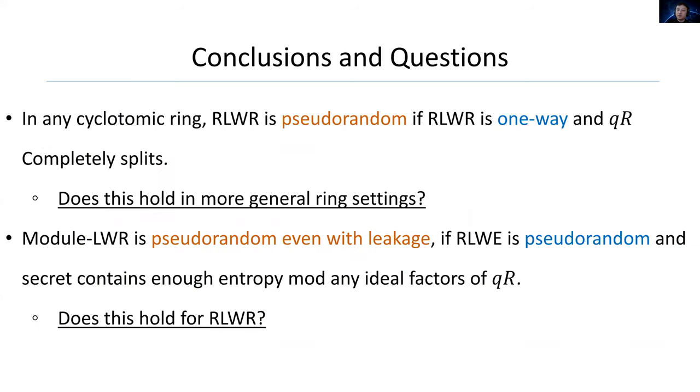Finally, let me conclude this talk. From this talk, we know that in any cyclotomic ring, ring LWR is pseudo-random if ring LWE is one-way and Q is completely split. We wonder if this holds in more general ring settings. And module LWR is pseudo-random even with leakage if ring LWE is pseudo-random, and the secret S contains enough entropy modulo any ideal factors of qR. But we don't know if this holds for ring LWR. Okay, thank you. Thank you.